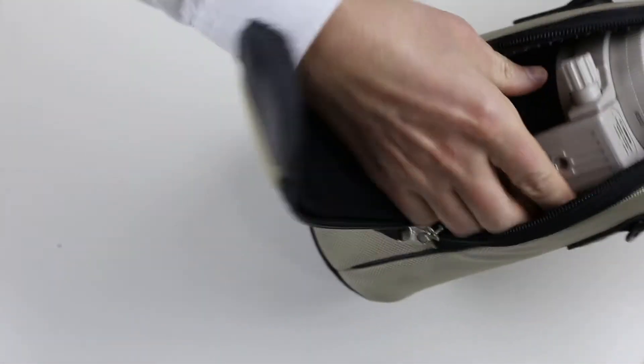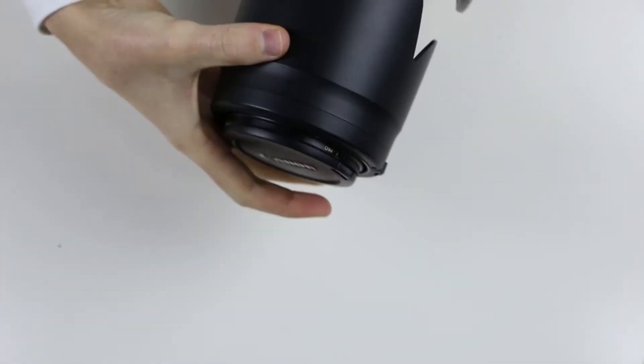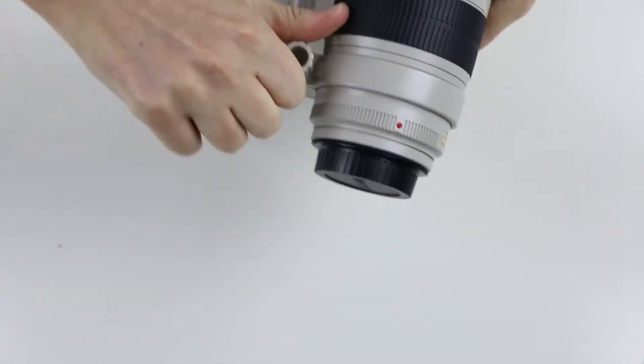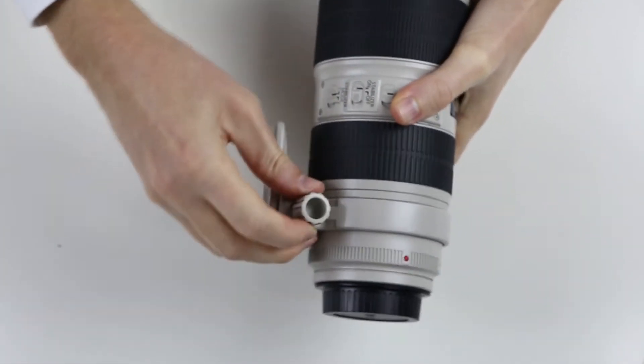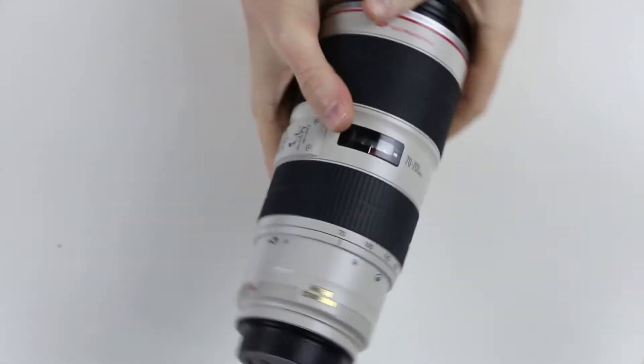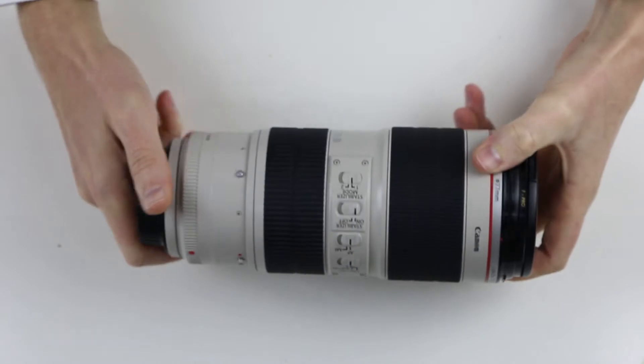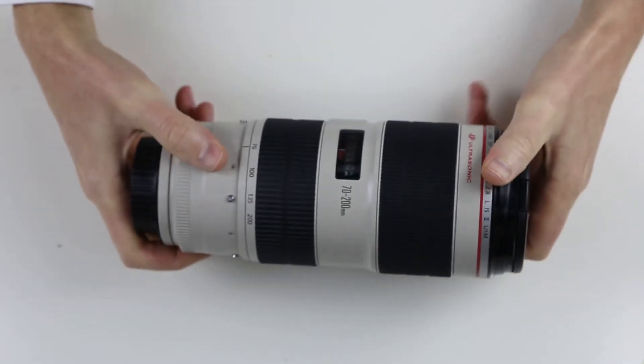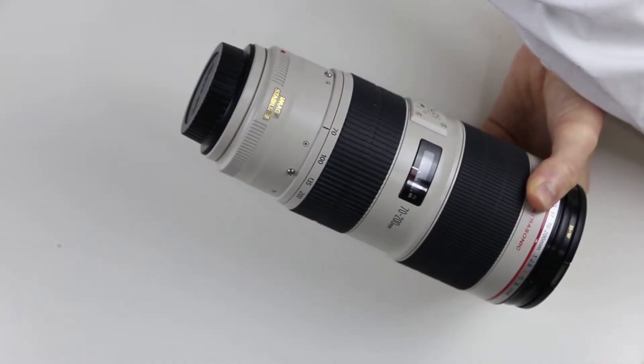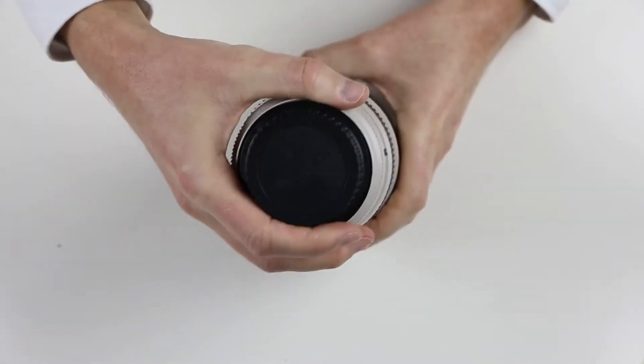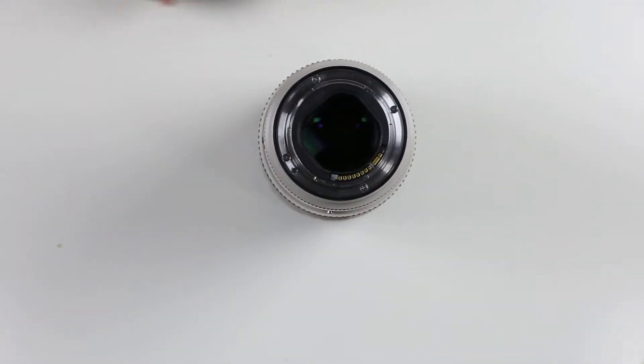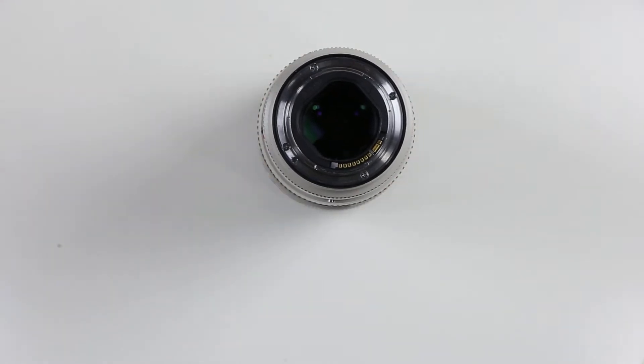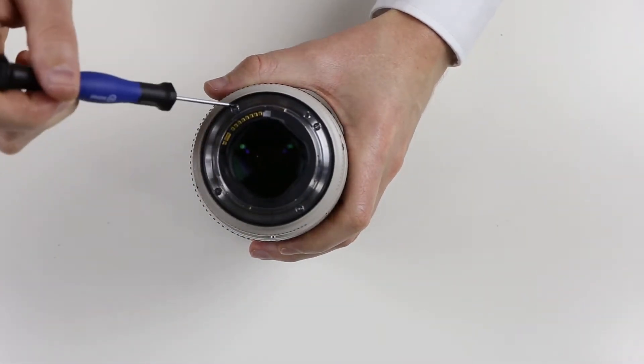This is the Canon 70-200 f2.8 L IS USM Mark II lens. Remove the accessories. First, remove those four screws.